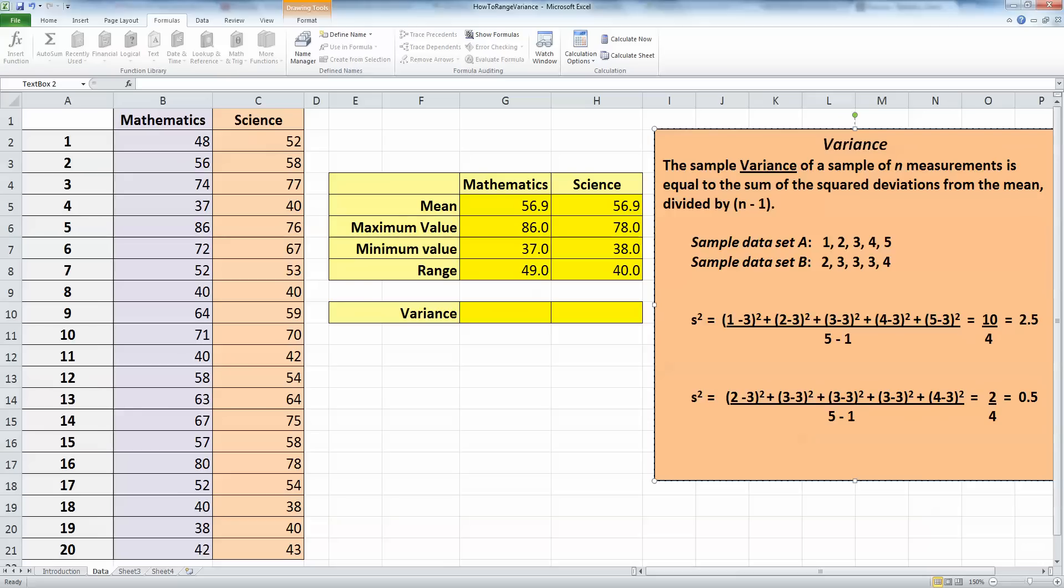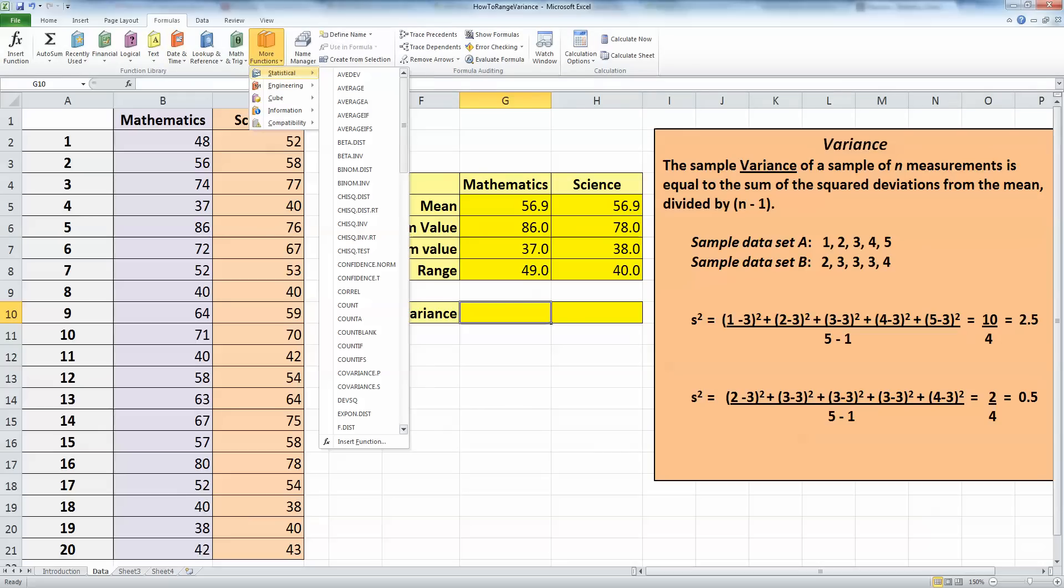In Excel, we could obviously go ahead and type in all of these formulas and add in all the values and so on, but that would take quite some time, and let's use a function instead. So fortunately, Excel has a formula, so in the formula ribbons, check on the more functions, and once again select the statistical options. And this time scroll down to near the end until you get to the Vs, and until you get to the Vs for var.